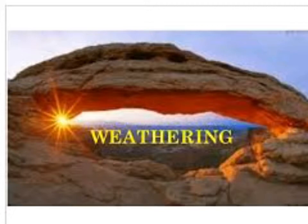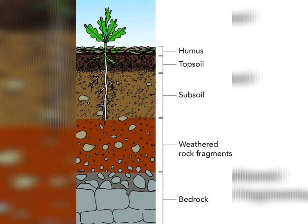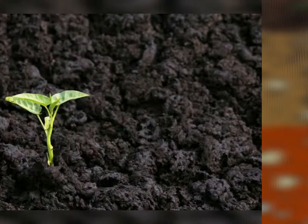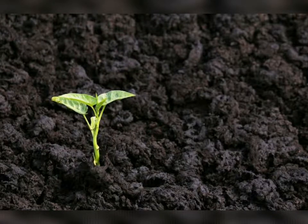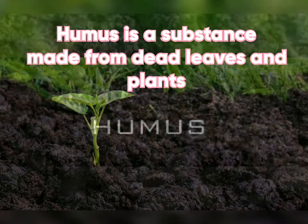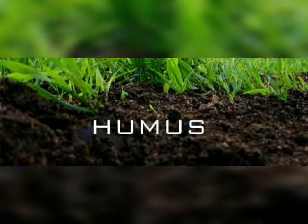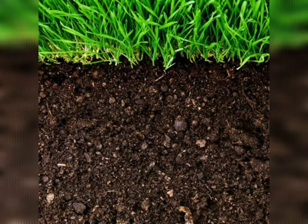Once the soil is formed, it settles down into layers. The upper layer of the soil is called the topsoil. The topsoil contains humus. Humus is a substance which is made from dead plants and dead leaves, and it helps the plants to grow as humus makes the soil fertile. Fertile means the soil is best and fit for the plants to grow.